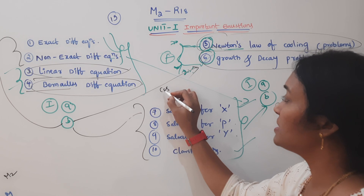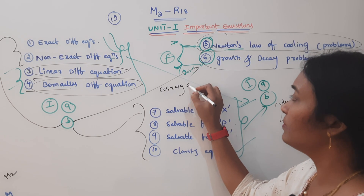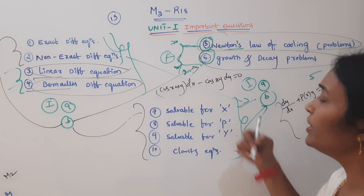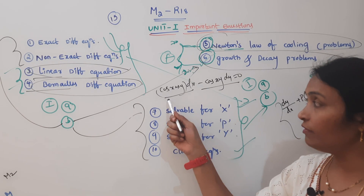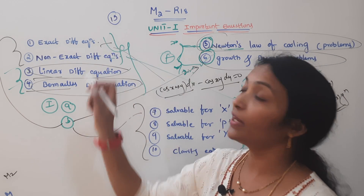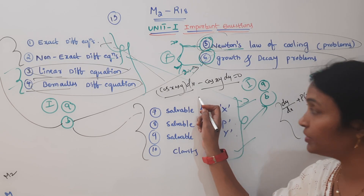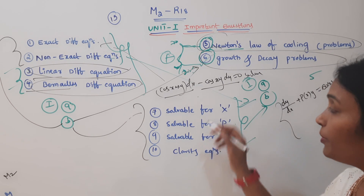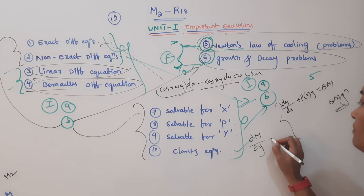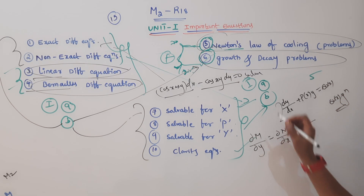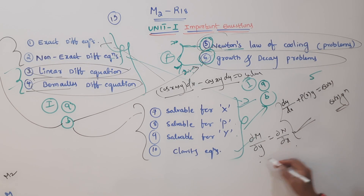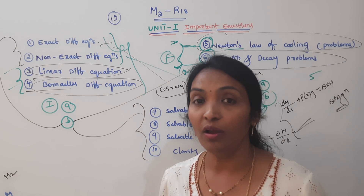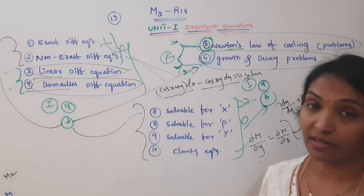You should look at this. One last paper: cos x, cos y sum dx minus cos x, y dy is equal to 0. This is in the form M dx plus N dy — that is nothing but an exact differential equation. Just check whether this is exact or not. Do dM/dy equal to dN/dx — check it. If you want to solve it, you can use the integrating factor: 1/(Mx + Ny) or 1/(Mx − Ny).